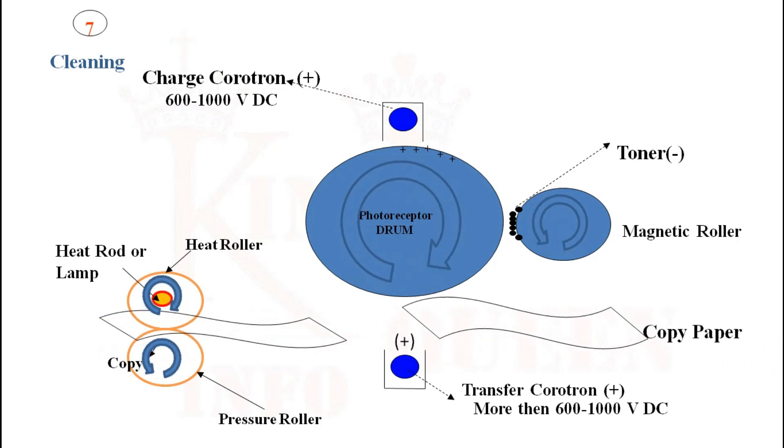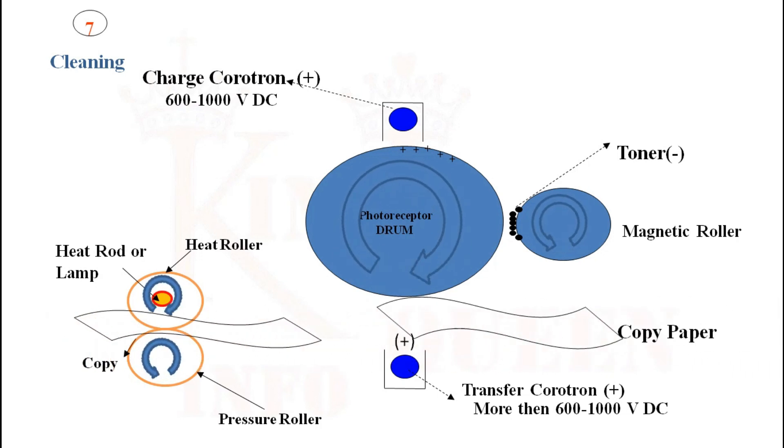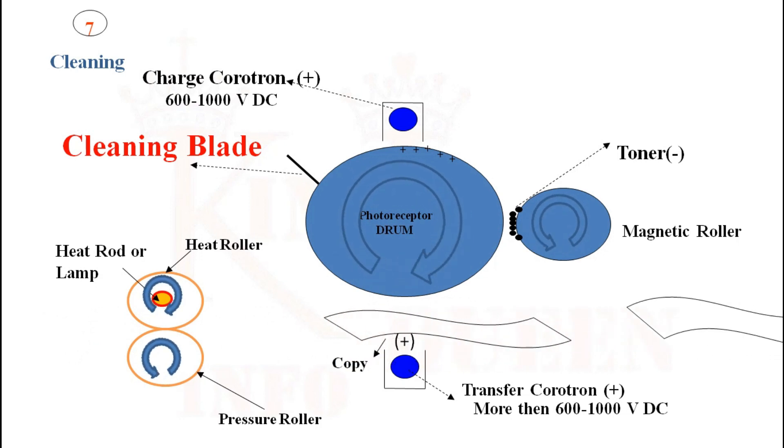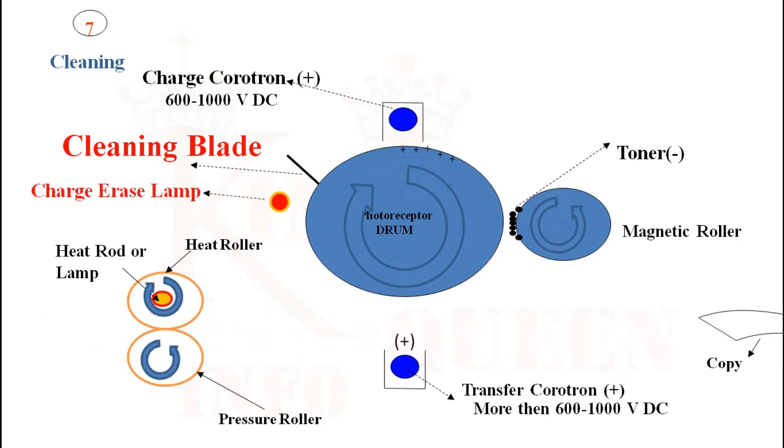With the help of a cleaning blade or cleaning roller, residual toner is cleaned, and with the help of pre-clean corotron or pre-charge erase lamp, residual charge is neutralized. This is called cleaning function.